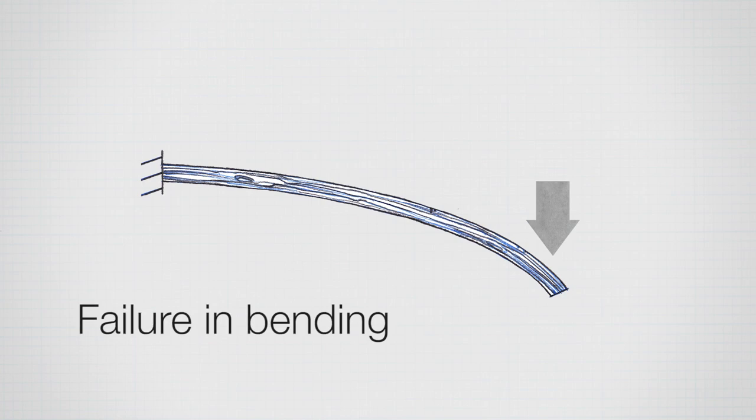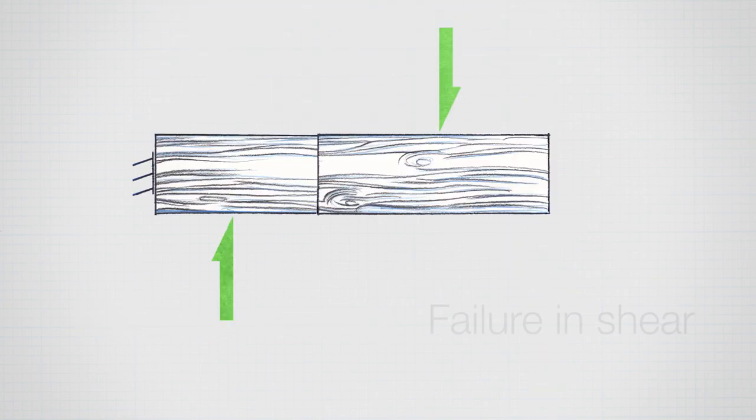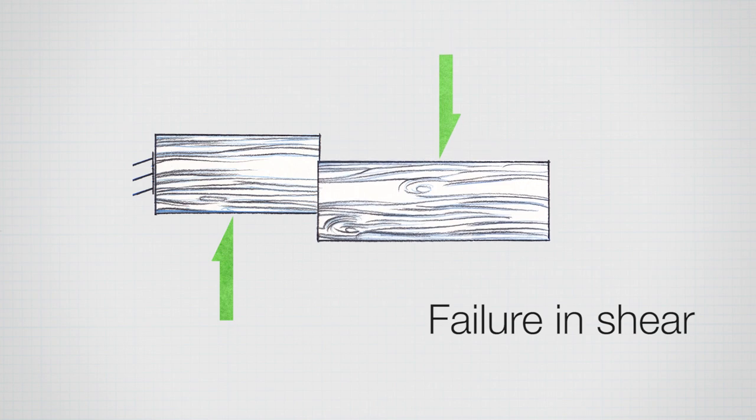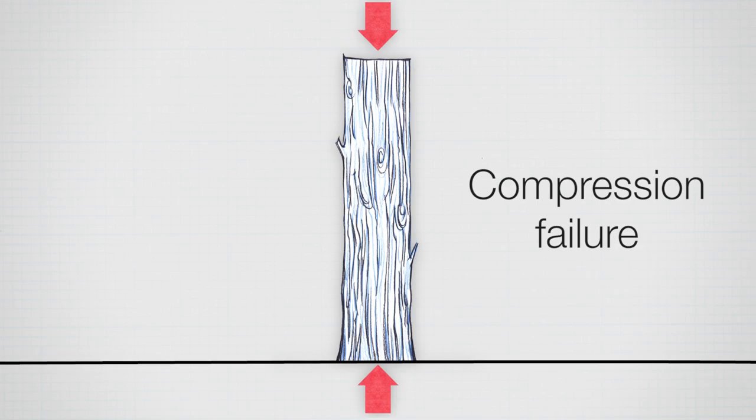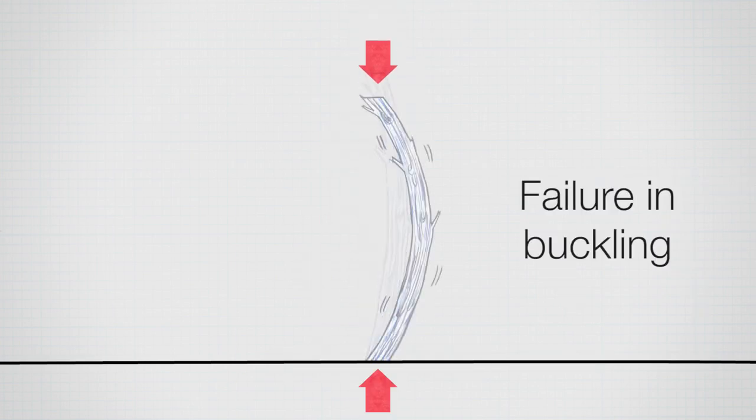Looking at individual elements, an engineer goes back to beam design. A beam can fail in bending or in shear. A longer, slender beam would fail in bending — reaching too much tension or compression — while a shorter, deeper beam would likely fail in shear. The engineer checks the beams are okay, then moves on to columns, which can fail in compression or buckling, and checks those as well. That covers the vertical load and vertical load flow.